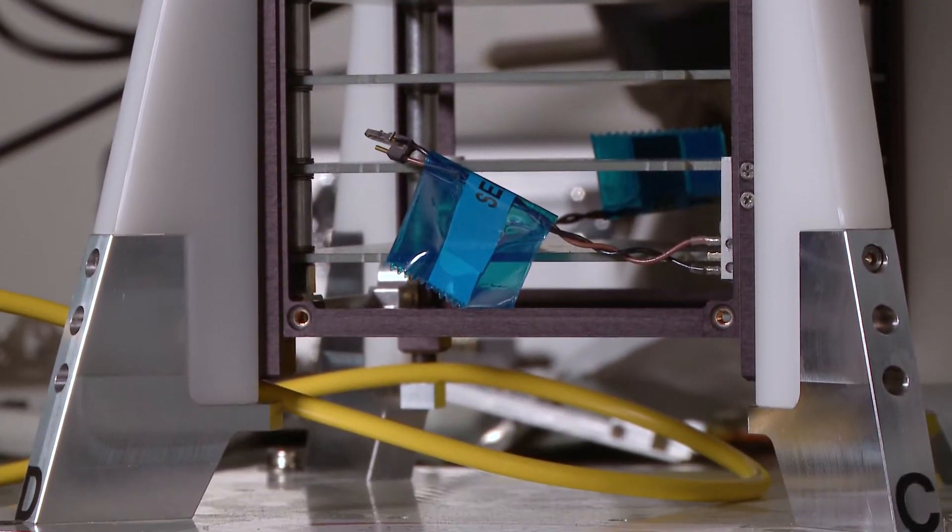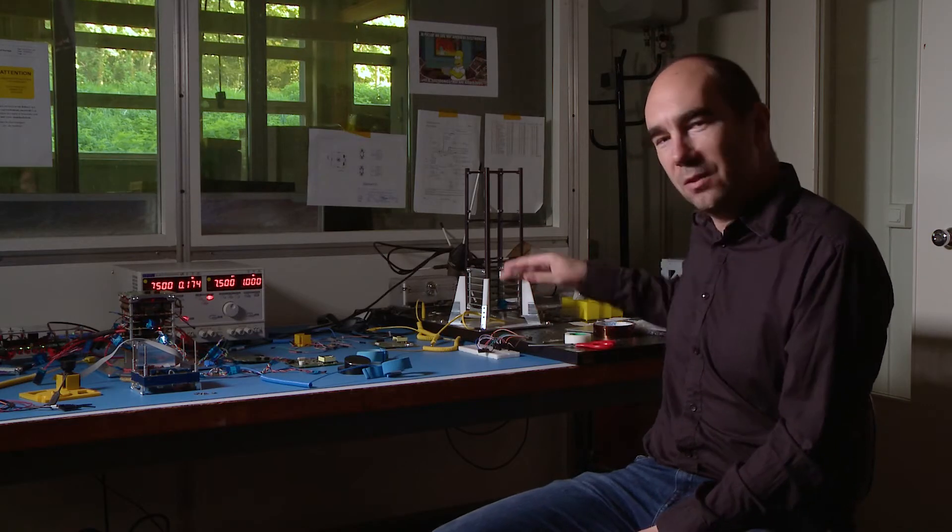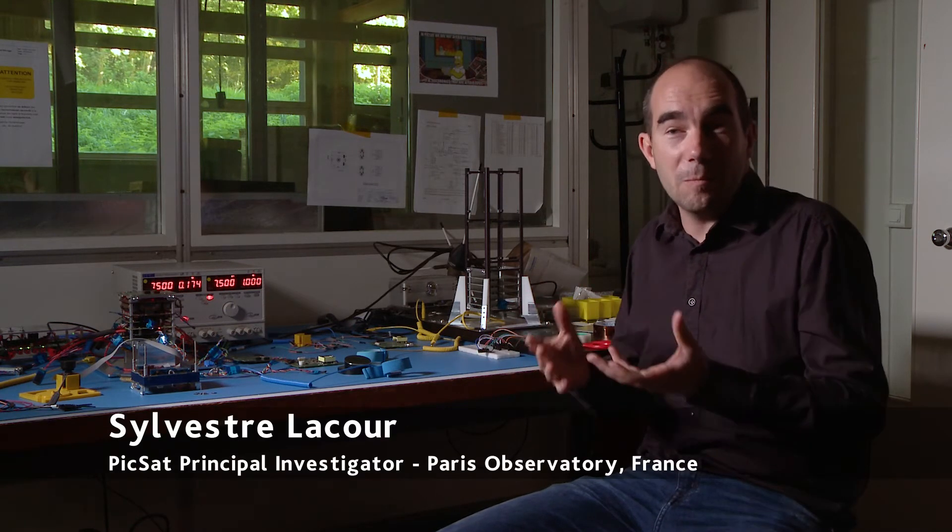To give you a scale of the satellite, here you have the structure. It's a CubeSat which is 10 cm by 10 cm by 30 cm, so it's very small, so we couldn't put a big telescope in it.